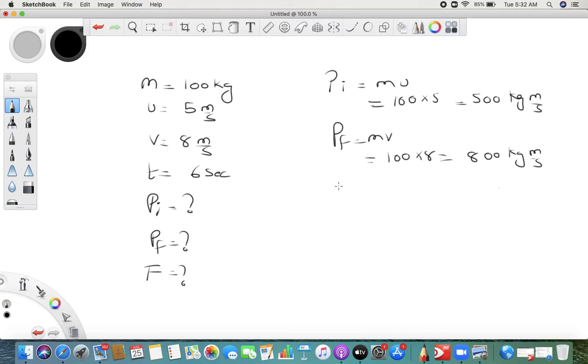Then force. For that we need acceleration. What is acceleration? v minus u upon t, so it is 8 minus 5 upon 6, so it is 3 upon 6, which is 1 upon 2 meter per second square. F is equal to ma, m is 100 into 1 upon 2, so it is 50 newton.